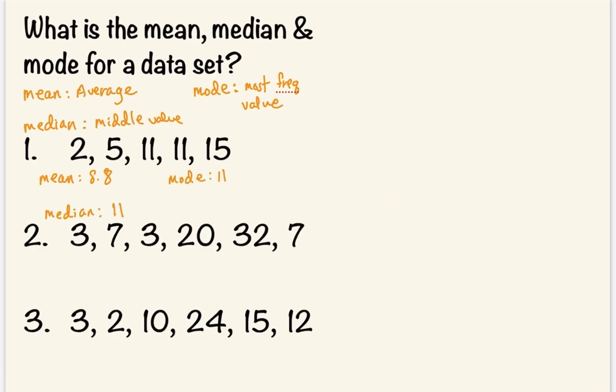Example two. Our mean, once again, is the sum of the numbers divided by, there are 6 numbers. When we add up all the numbers in the numerator, we get 72 divided by 6. This is equal to 12. So our mean is 12.